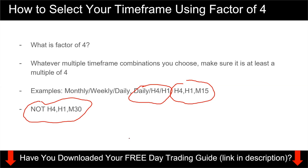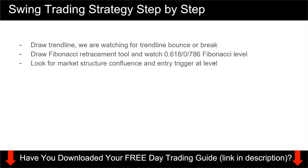So this is how you use the factor of four. Just to clarify, you do not need to choose three timeframes, but you do need to follow the factor of four. You could trade just the daily and H4, or just the H4 and H1 — both are fine. But always stick to the multiple of four. If anything is unclear, leave a comment below and my team will do our best to help you.